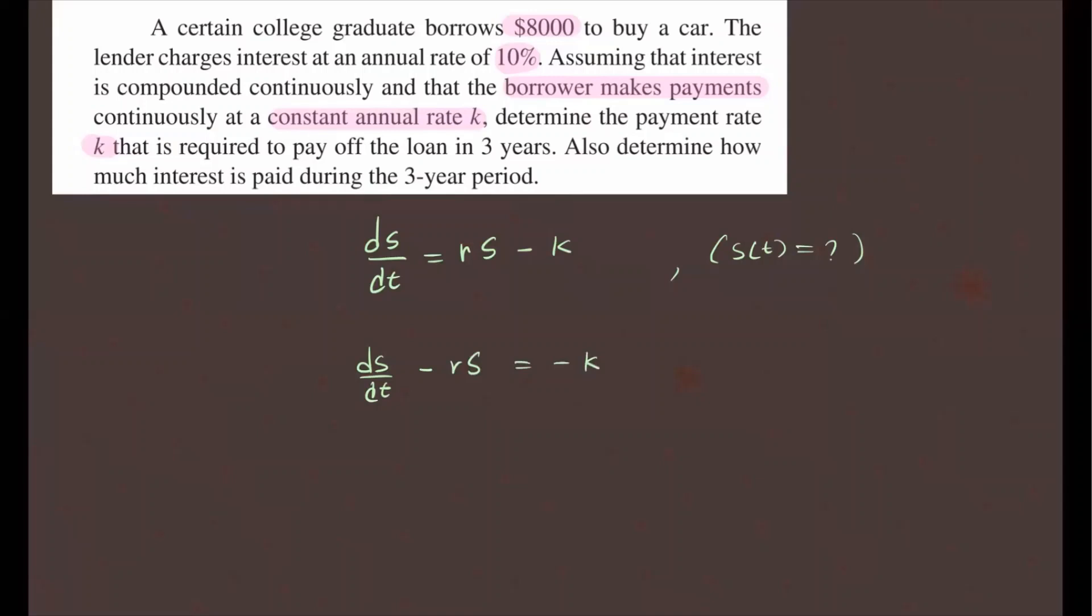Now, this is our function P of T. We're looking for an integrating factor. I'll leave a link for solving linear differential equations in the description box so the procedure I'm about to do will make sense. We're trying to look for this mu of T, which is going to be e to the integral of P of T dt. P of T is this function right here. So if I substitute P of T, I have the integral of negative R dt, and this would be e to the negative Rt.